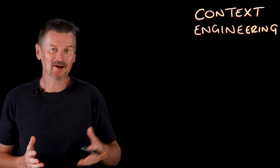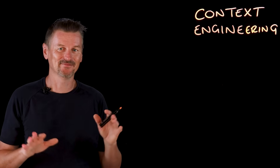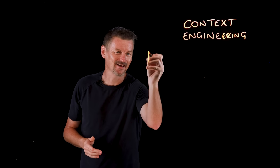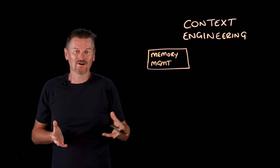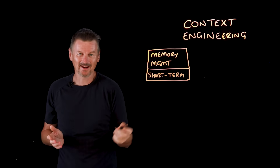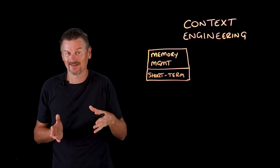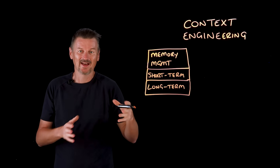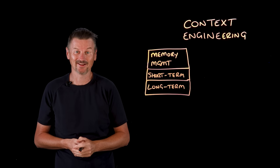Context engineering helps build dynamic agentic systems that orchestrate the entire agentic environment. Agentic AI needs memory, and memory management can be thought of in two forms. Short-term memory might involve summarizing long conversations to stay within context windows so past conversations are not forgotten. Long-term memory uses vector databases to retrieve things like user preferences, past trips, and learned patterns.